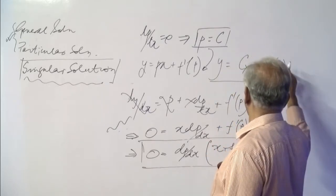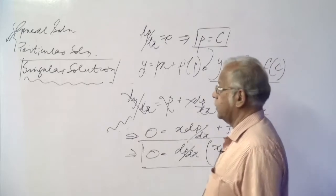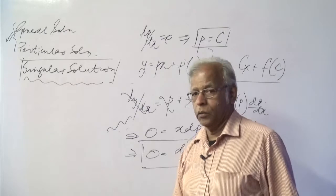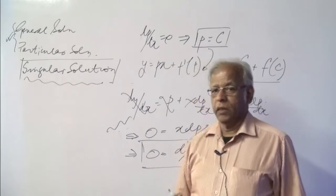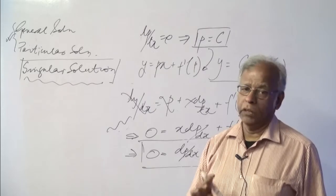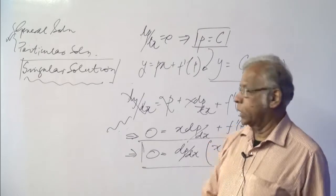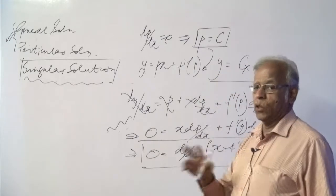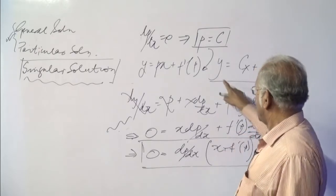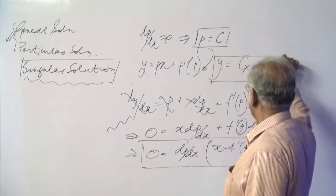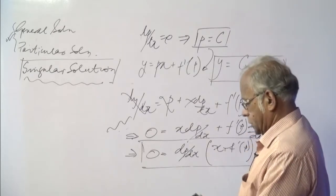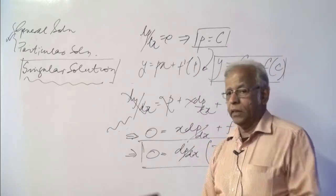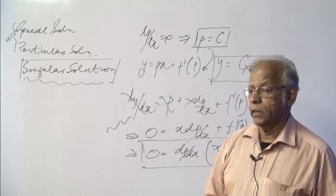This solution contains one arbitrary constant, which is equal to the order of the equation. Since y equals px plus f(p) has dy/dx as the highest order derivative, the equation is of first order. This solution contains as many independent arbitrary constants as the order of the equation, so this is the general solution. If y equals px plus f(p), then y equals cx plus f(c) is the general solution.